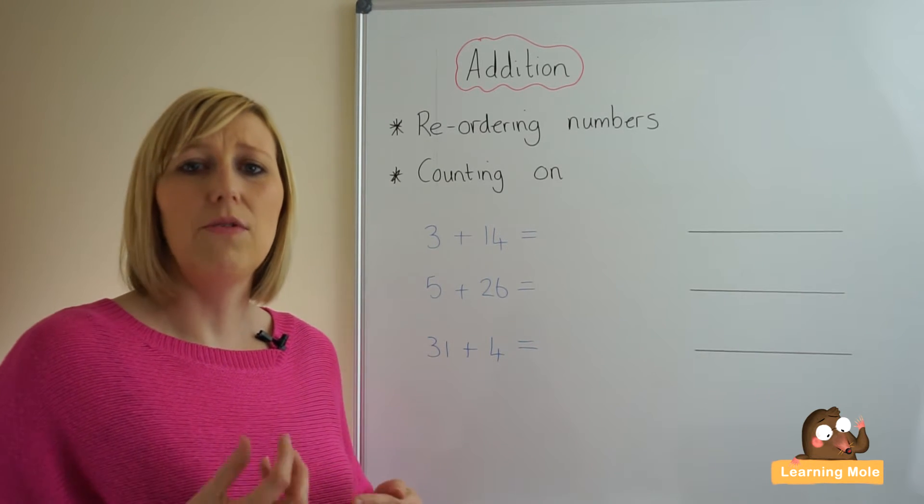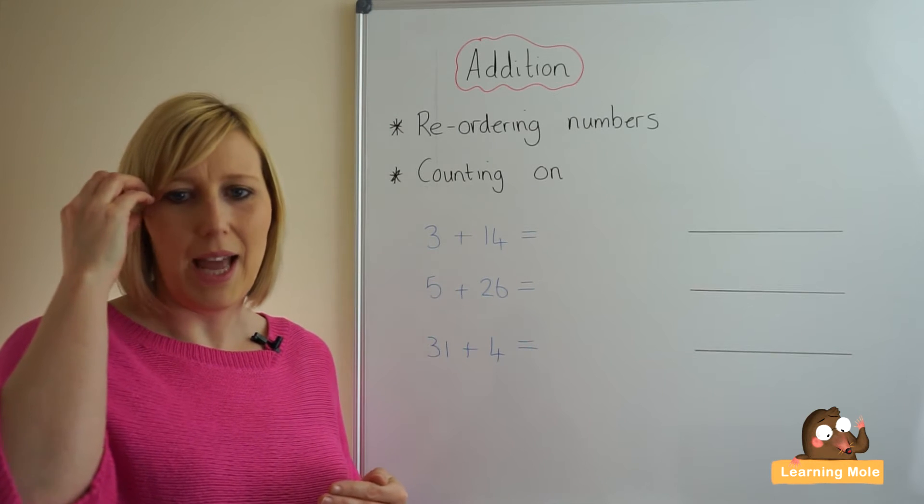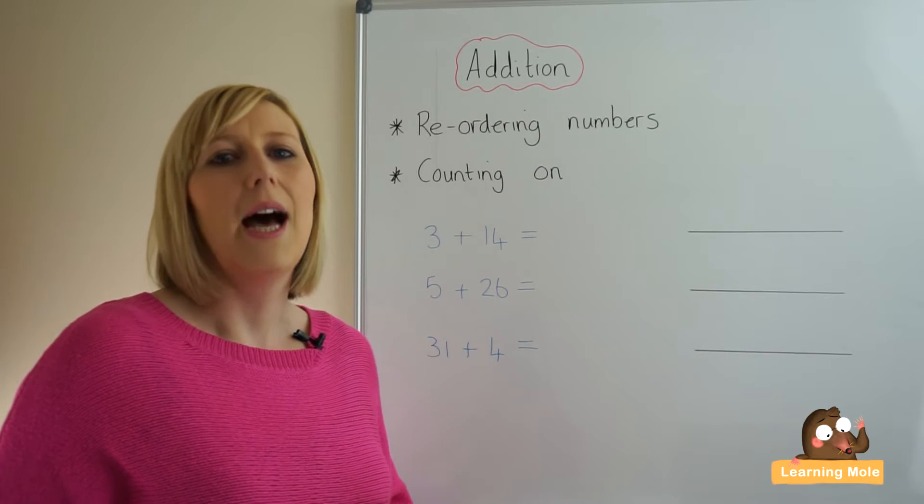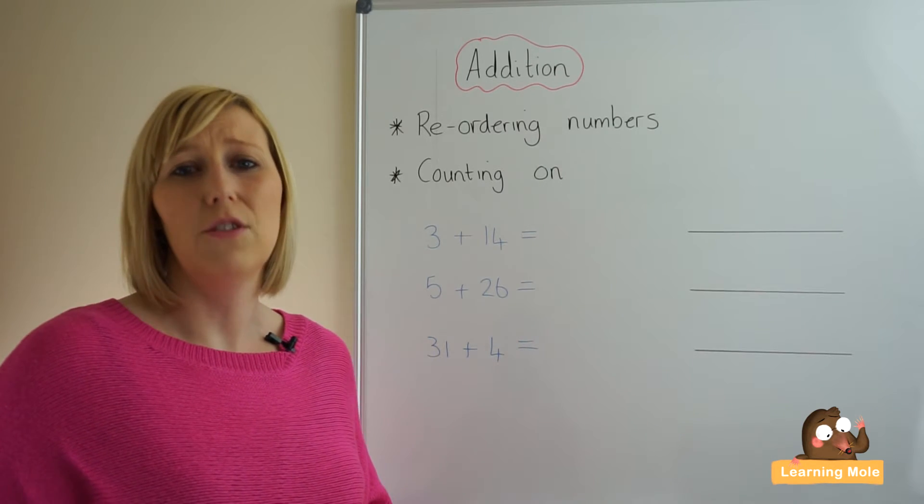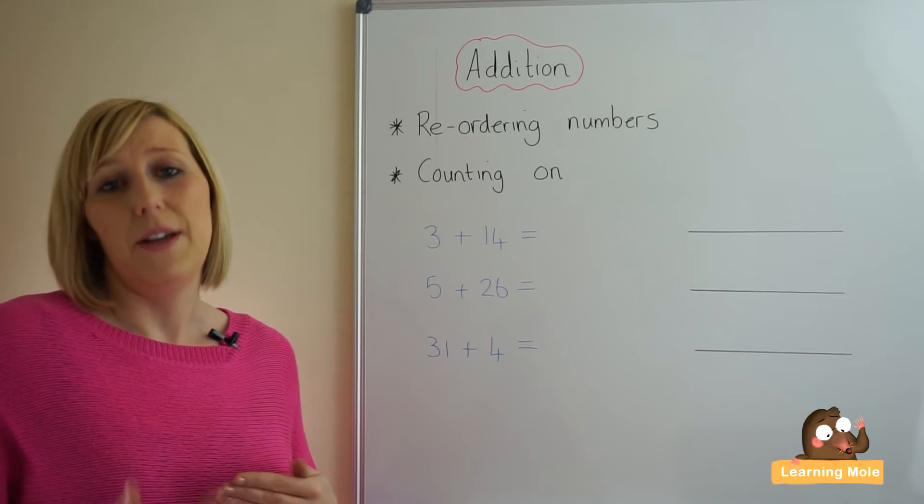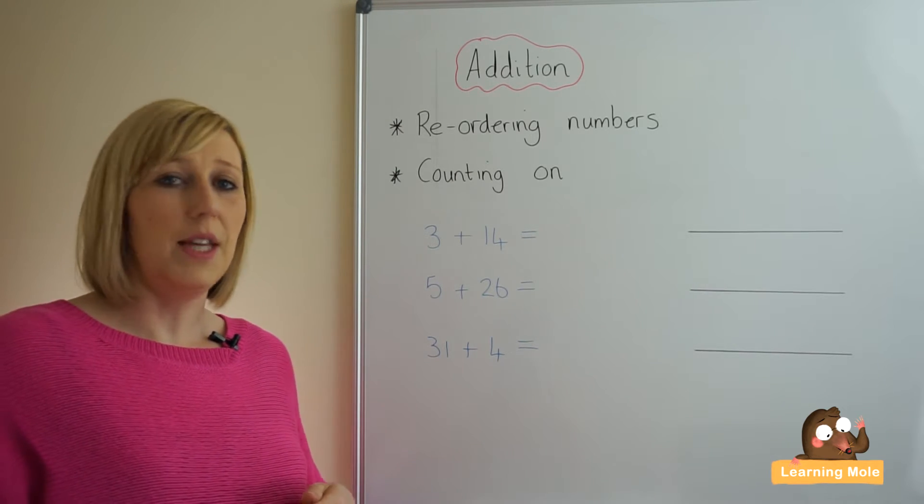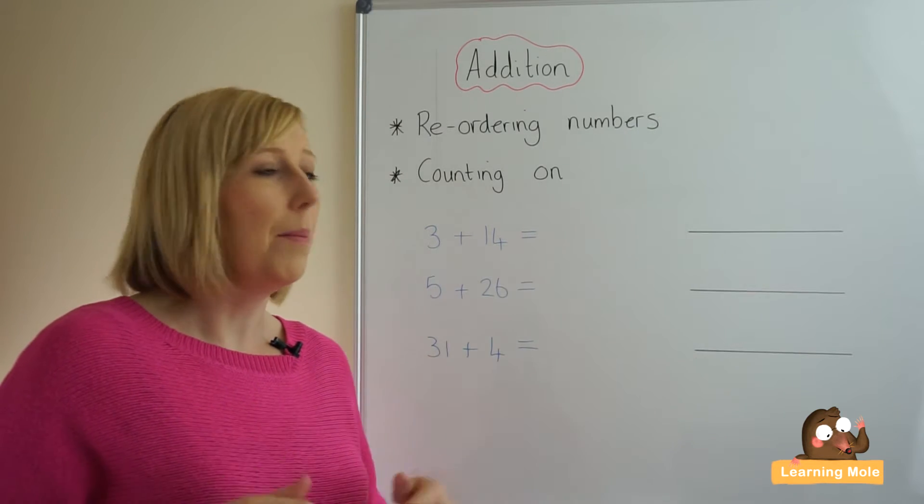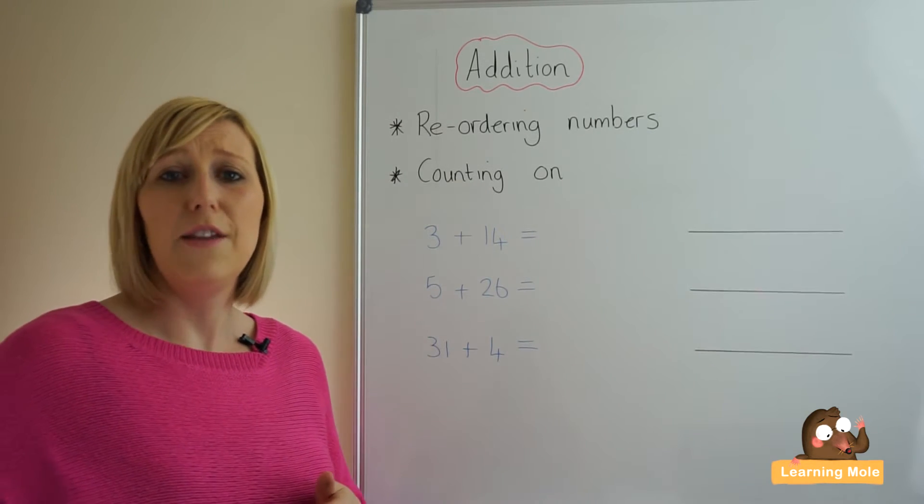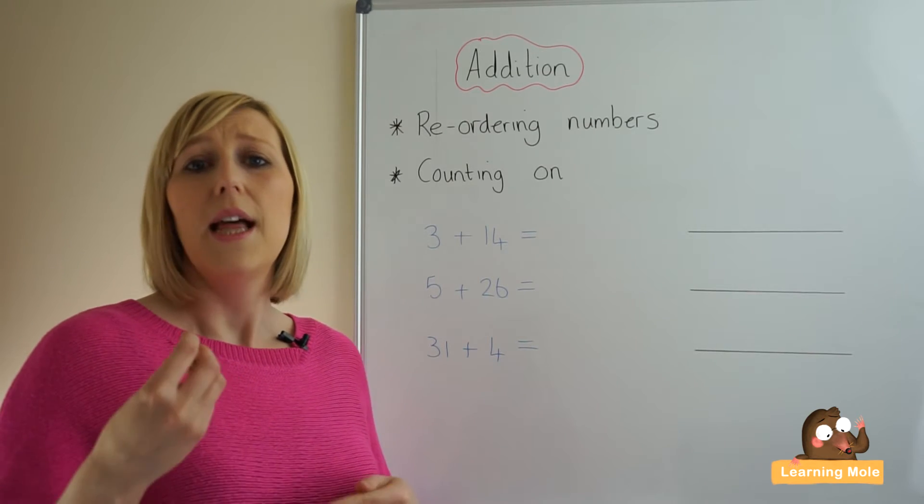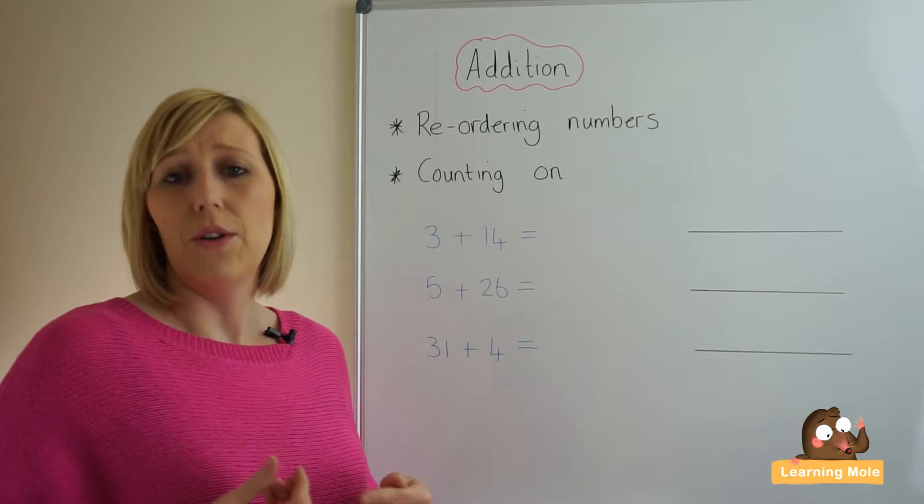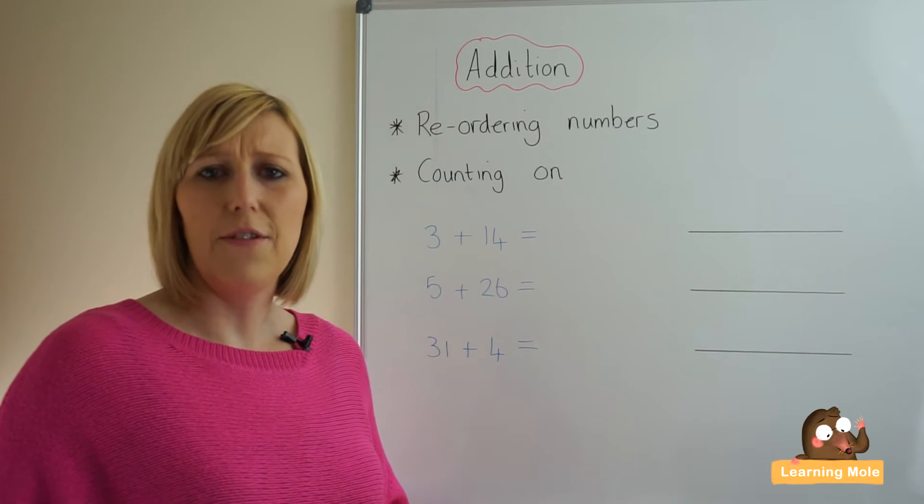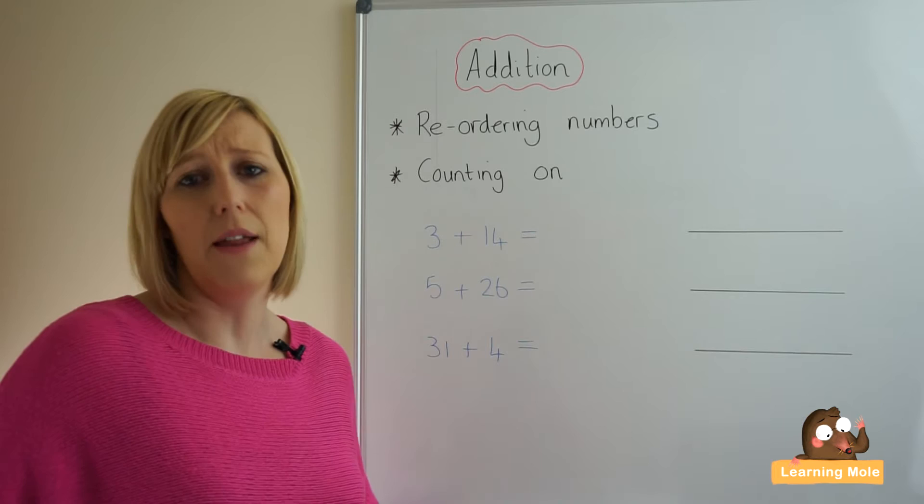This is a great strategy because already they have the biggest number in their head. So it means that there are not as many steps for your child to go through and not as many steps for your child to count. Once they are able to reorder the numbers then you want to start thinking about that counting on strategy.